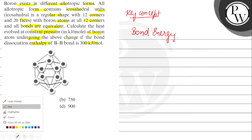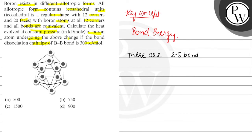On observing the structure, there are 2.5 bonds between each boron atom.